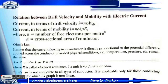We denote I as current and drift velocity as Vd. The relationship between I and Vd is I equals to nEAVd, where n equals the number of free electrons per meter cube and A is the cross-sectional area of the conductor. This is the relationship between current and drift velocity.